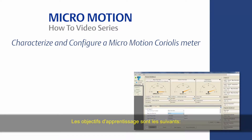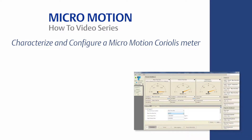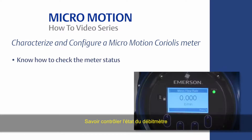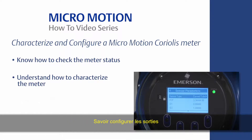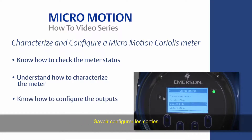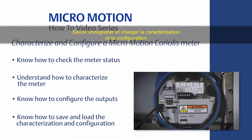The learning objectives are the following: know how to check the meter status, understand how to characterize the meter, know how to configure the outputs, and know how to save and load the characterization and configuration.